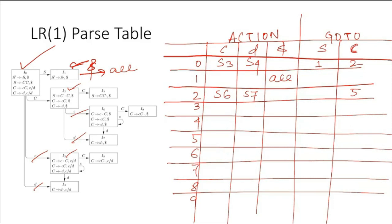In state I3: for capital C it goes to I8, so we put 8 here. For small c there is a self-loop back to I3, so shift 3 comes here. For D it goes to I4, so shift 4. Then we go to state I4, where we have a reduction C → D dot, which is rule number three — R3.